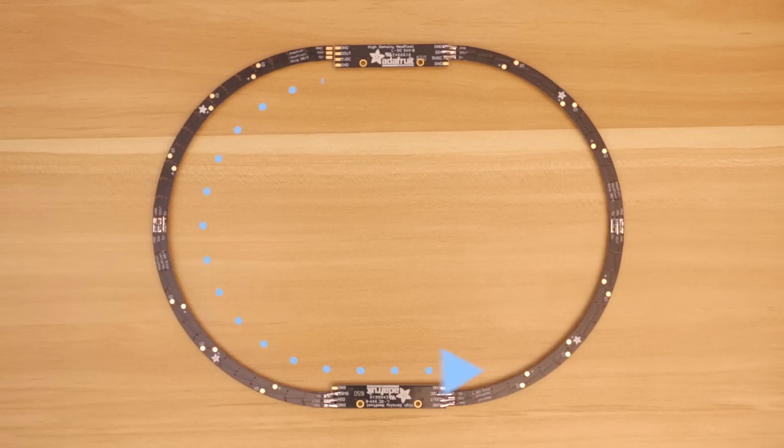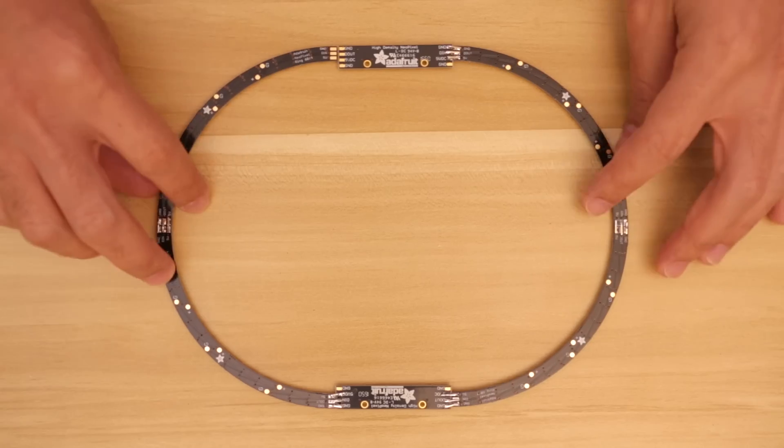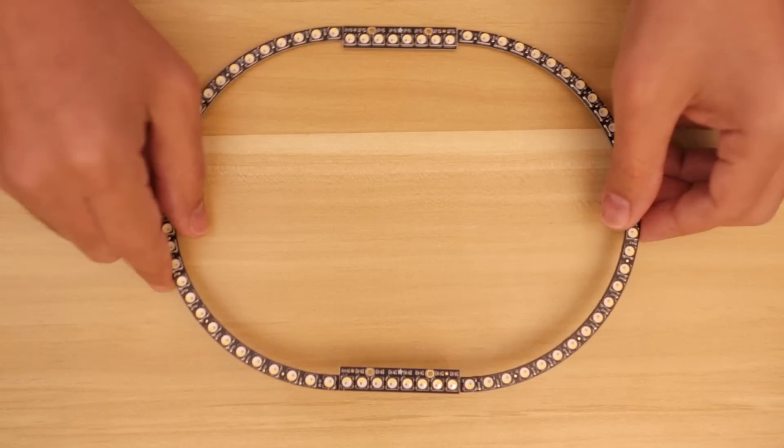Data in should always flow into data out, so be sure they're oriented correctly. Make sure to leave the end unconnected because we'll need to attach wires to the first NeoPixel with data in.